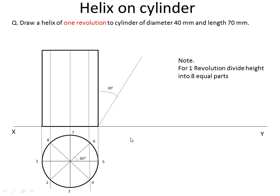Now divide this height into 8 equal parts. Why? Because we have divided the circle into 8 equal parts and we have to draw a helix on the cylinder for one revolution. One revolution means when we mount a thread to one point, it goes around and comes back to the same point. So we divide the height into 8 equal parts — marking 1st, 2nd, 3rd, 4th, 5th, 6th, 7th, 8th — then draw a parallel line. So the cylinder is divided into 8 equal parts.